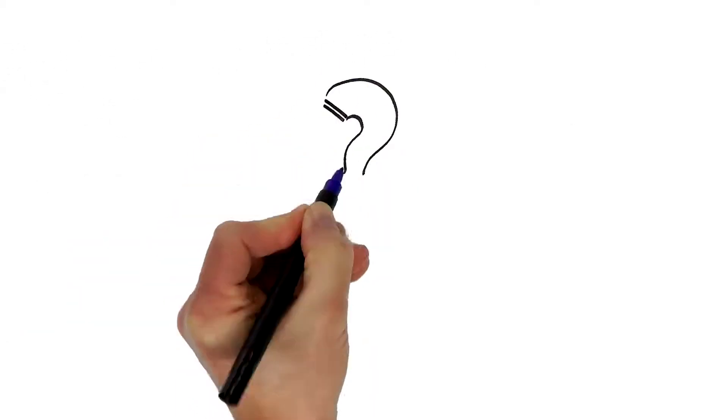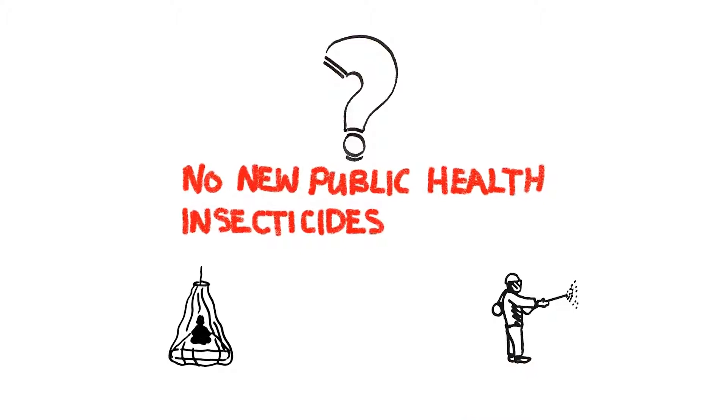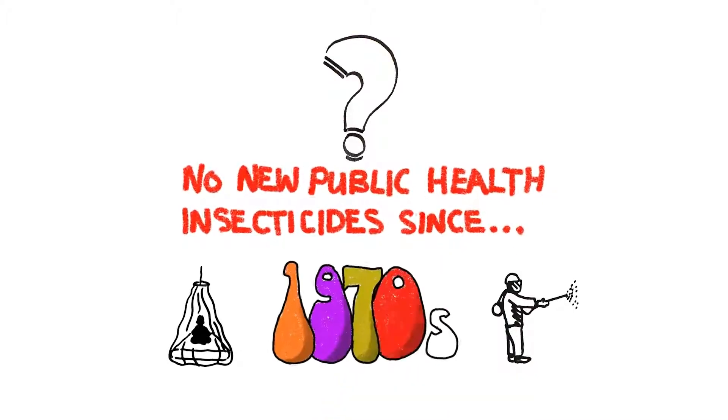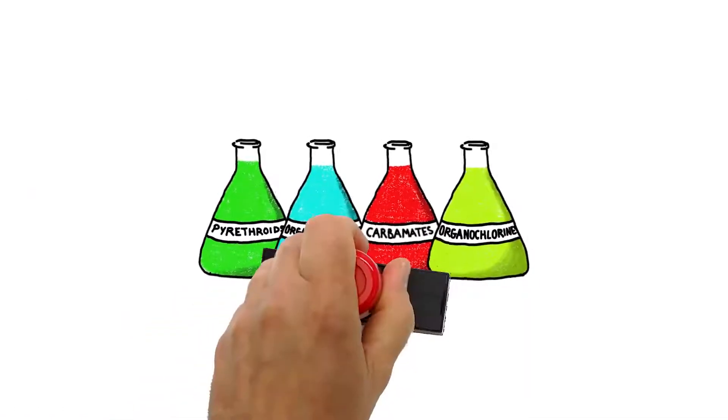So what's caused this problem? Up until now, no new public health insecticides have been introduced for bed nets and indoor residual spraying since the 1970s. So we've had to rely on just four classes of approved insecticides for indoor residual spraying.